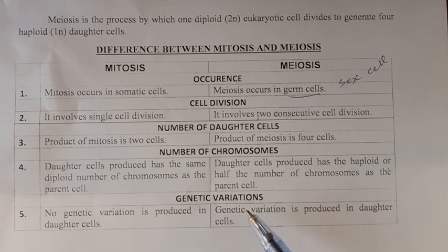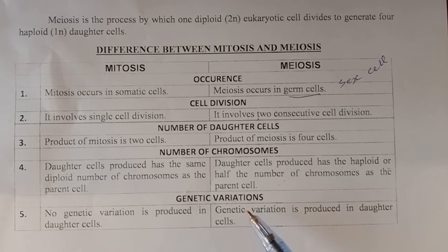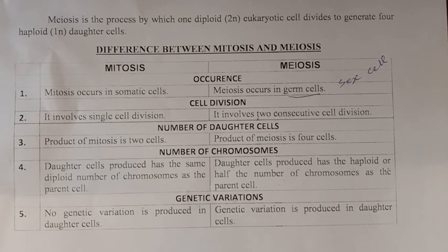So this is all about cell division, types of cell division — mitosis and meiosis — and the differences between mitosis and meiosis. If you have any questions, comment below. Thank you.